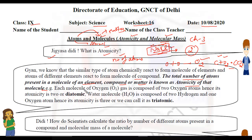For example, each molecule of oxygen gas is composed of 2 oxygen atoms — so its atomicity is 2, making it diatomic. Next, the water molecule is H2O, composed of 2 hydrogen and 1 oxygen — atomicity is 3, so it is triatomic.